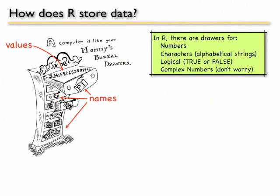So the drawers are like slots for the objects and the drawers have names. So in R there are drawers for numbers, for characters or alphabetical strings, for logical values, which are either true or false or zero or one, and then complex numbers. Now don't worry, we're not going to work with complex numbers in this course.